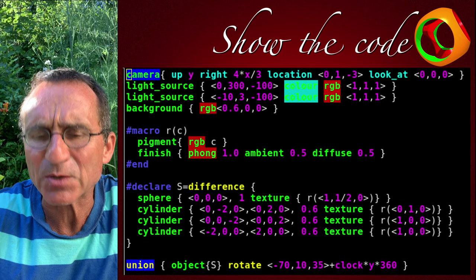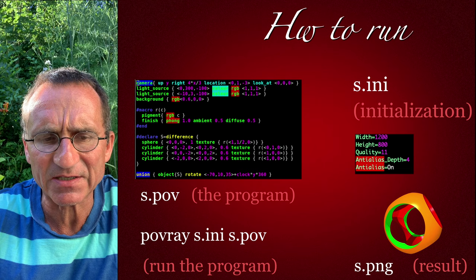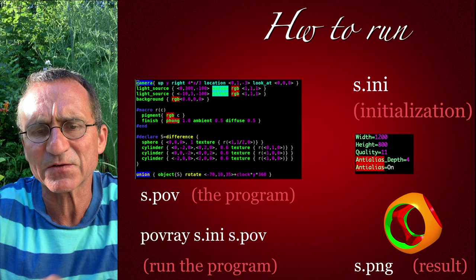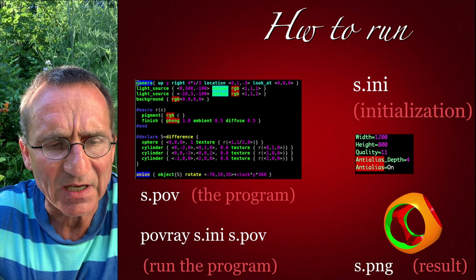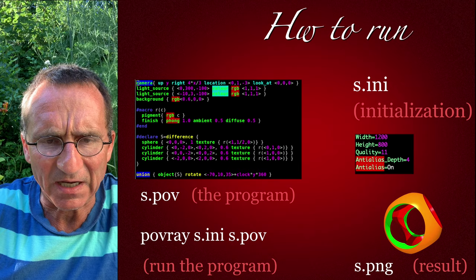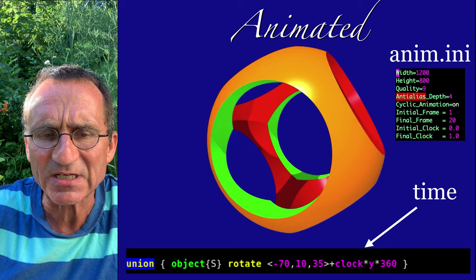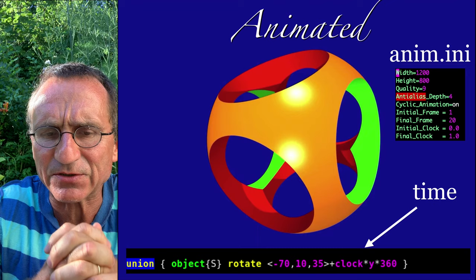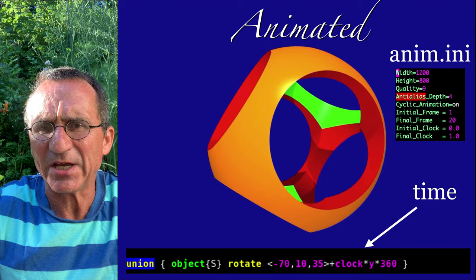There's also an animation parameter called clock. Only three files are involved: first the program text file, then an initialization file which tells how big the program is rendered and how accurately it is rendered. Then you run it and get a PNG file as output. You can also animate it. Here we see an animation initialization file which says it should be 1200 by 800 pixels, with a cyclic animation of 20 frames, where the time parameter goes from zero to one.